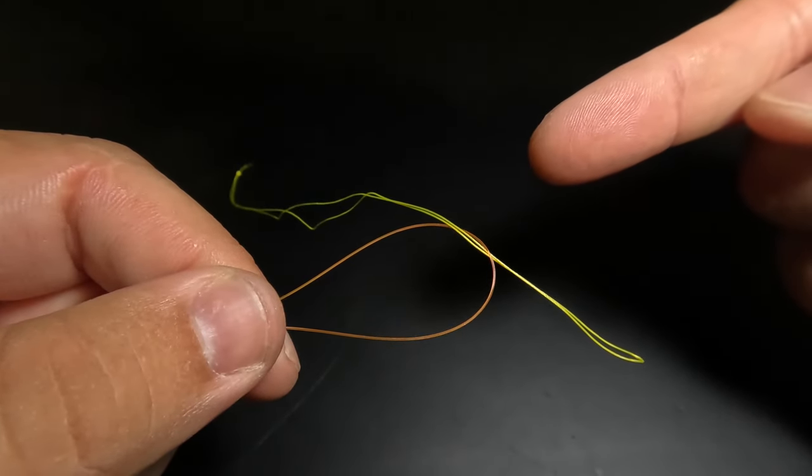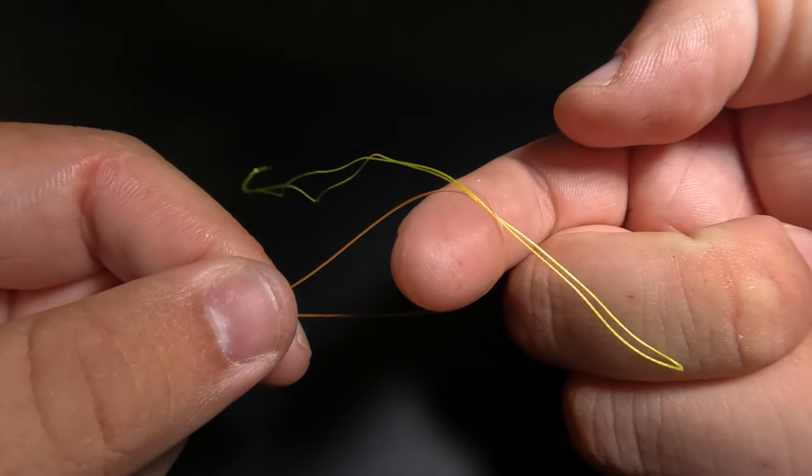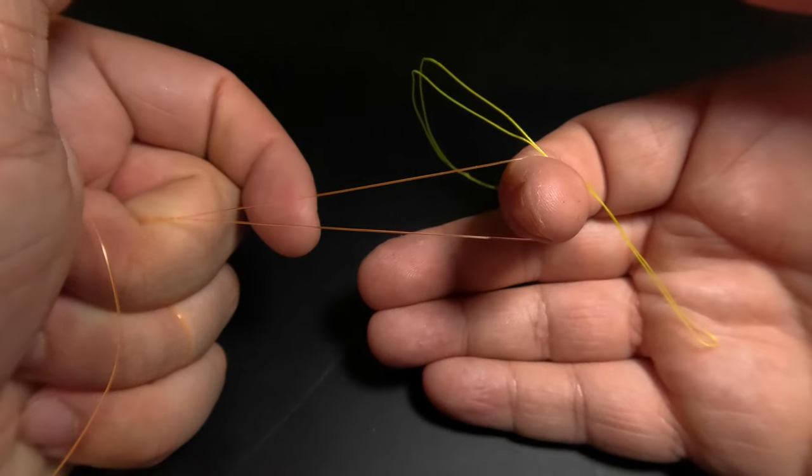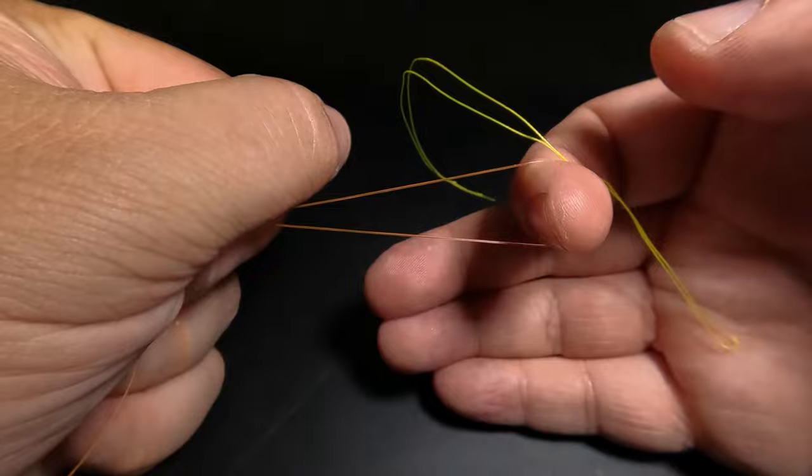Next, I'll take the index finger of my dominant hand and insert that into the loop. And I'm going to apply tension against that braided loop to hold it in place. And now using my free fingers, I'm going to perform four wraps with my braided loop around my level line loop.